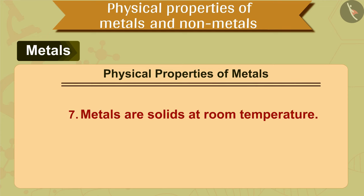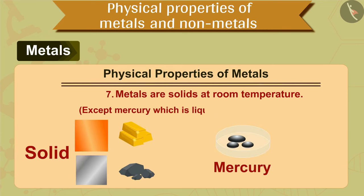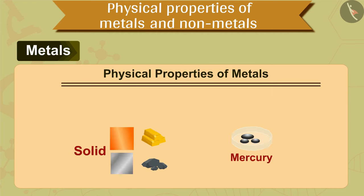The seventh property of metals is that metals are solids at room temperature, except mercury which is liquid at room temperature. Most metals are solids at room temperature, and mercury is the only metal that is liquid at room temperature.